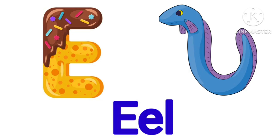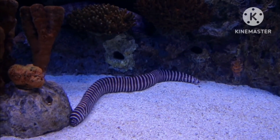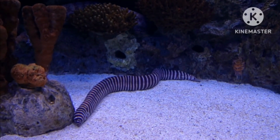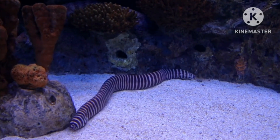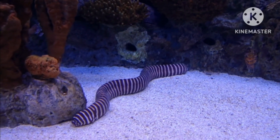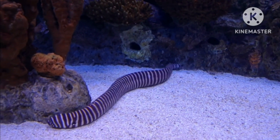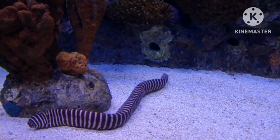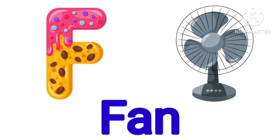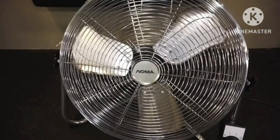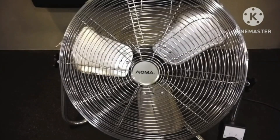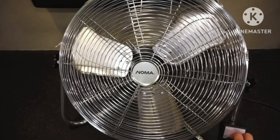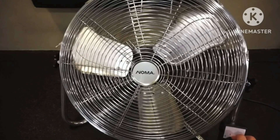E is for eel. What is E for? Repeat after me — E is for eel. F is for fan. Yes, say with me again — F is for fan.